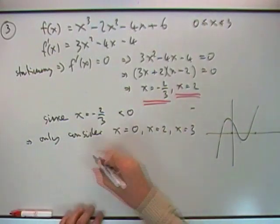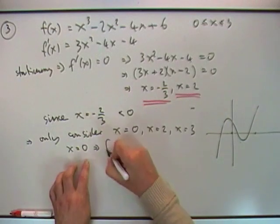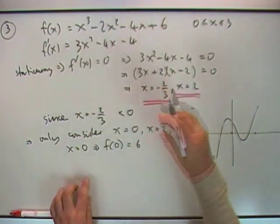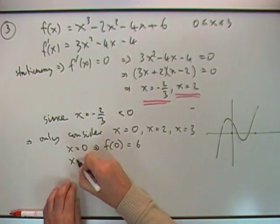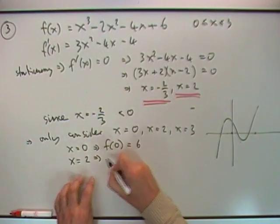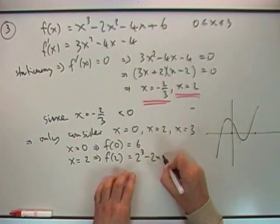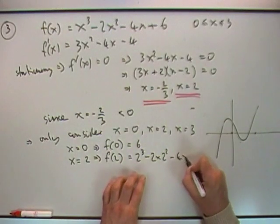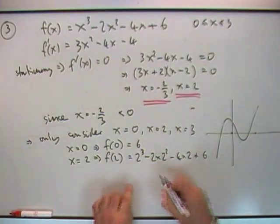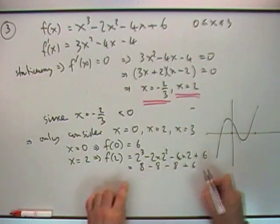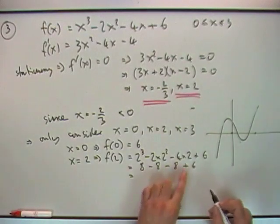So just put them down and see how they fare. x equals 0 means f(0) is 6. x equals 2 is the next contender, and that's going to be 2³ - 2 times 2² - 4 times 2 + 6. That's 8 - 8 - 8 + 6, so that comes in at negative 2.